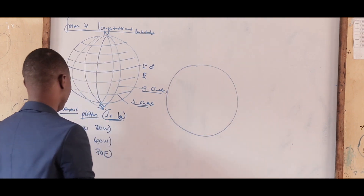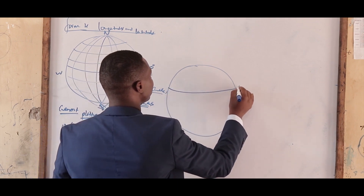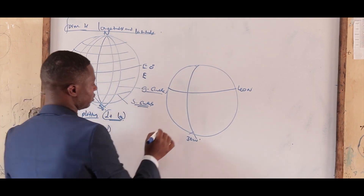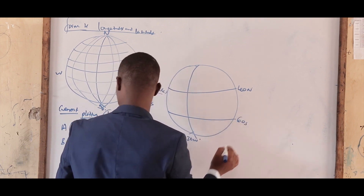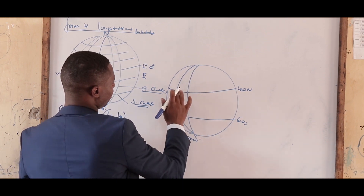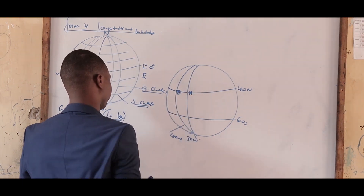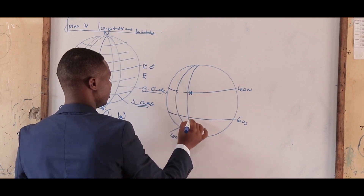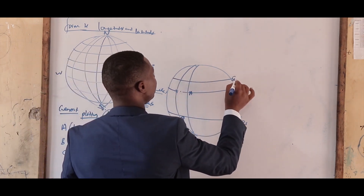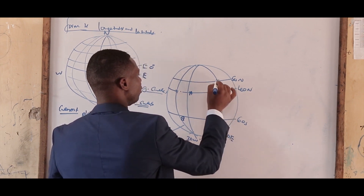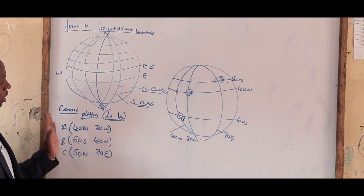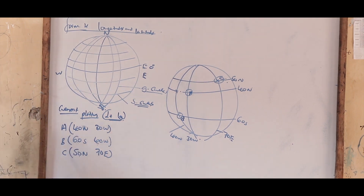To plot those points: the center line is the equator. For A, 40 degrees north gives us a point above the equator, then 30 west. For B, 60 south takes us below the equator, 40 west. For C, 50 north 70 east. So you have your points A, B, and C. You always start with the latitude, then the longitude.